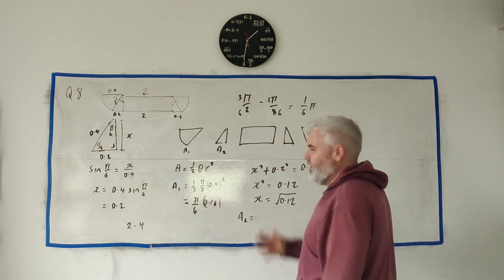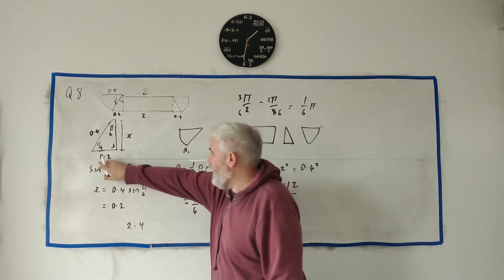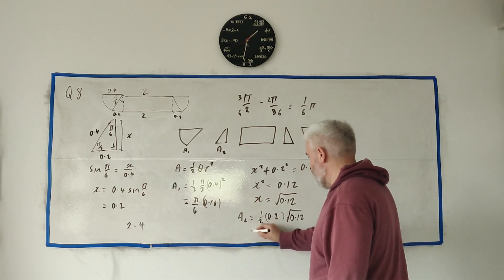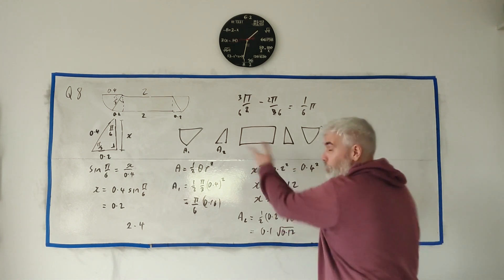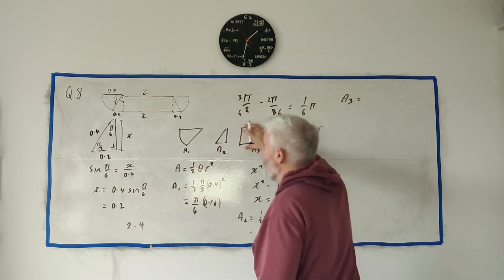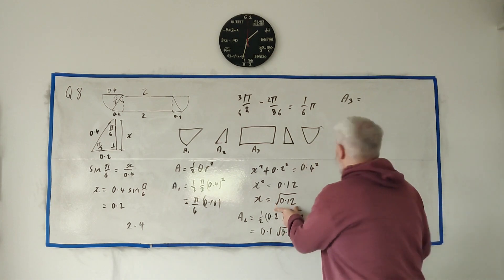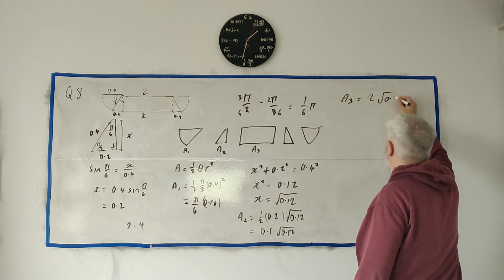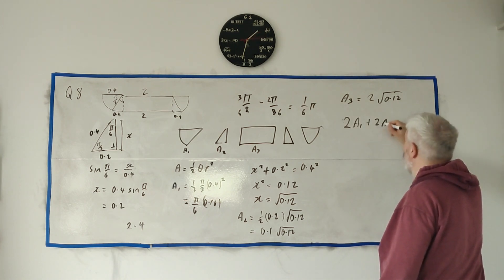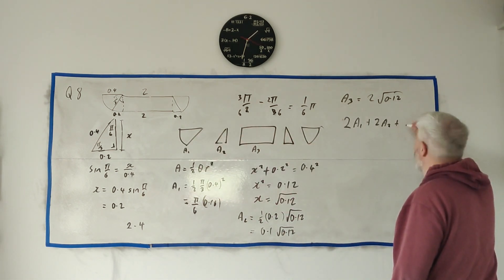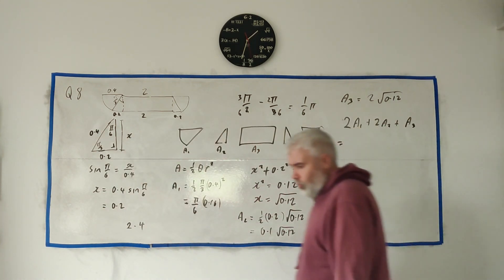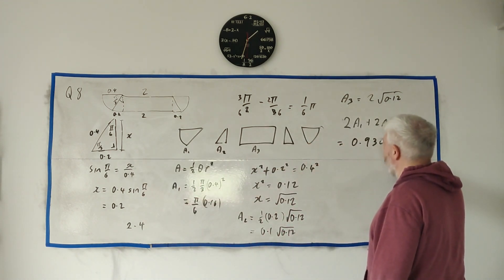The last thing is just this rectangle in the middle, A3. That's just base times height. The base is 2, and the height we just found is square root of 0.12. So A3 equals 2 times square root of 0.12. The total area is 2A1 plus 2A2 plus A3 — two of the sector shapes, two of the triangles, plus the rectangle. Put all of those into a calculator and you should get the final answer of 0.930 to 3 significant figures.